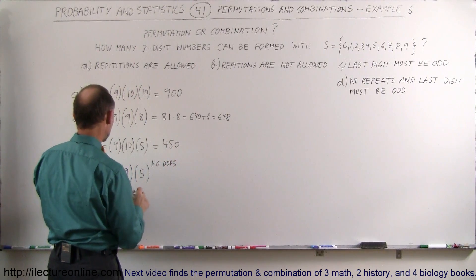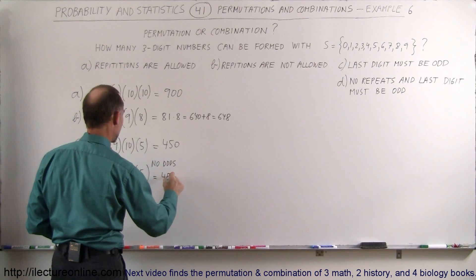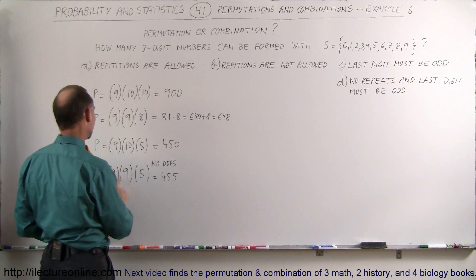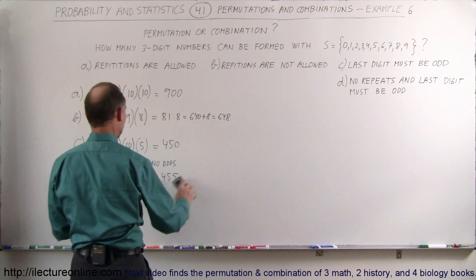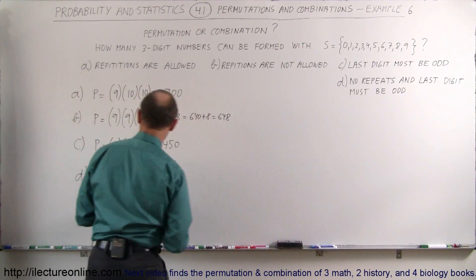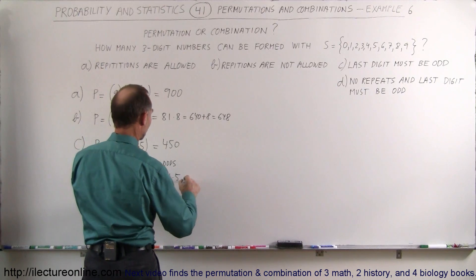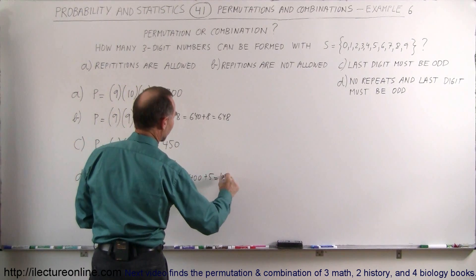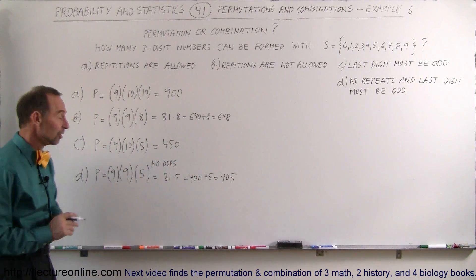And so therefore it's 9 times 9, which is 81, times 5, which is going to be... let me try that again. I don't think that's correct. So 9 times 9 is 81, times 5, 5 times 8 is 400, 5 times 1 is 5, so that's equal to 405. That's a lot better. So no odds were picked, 405 permutations.